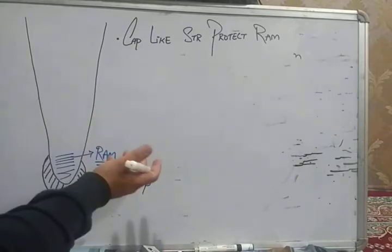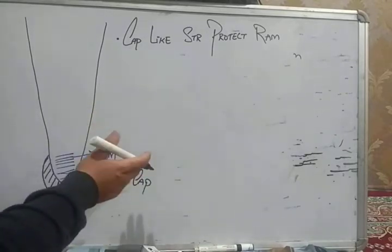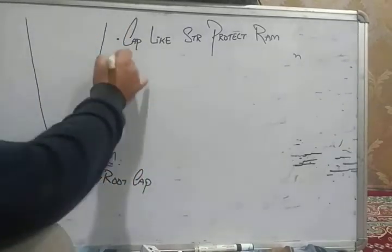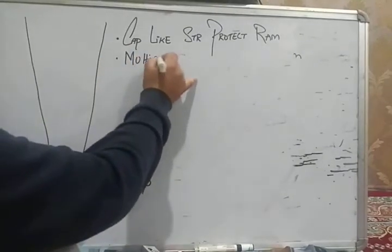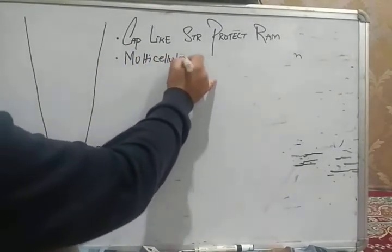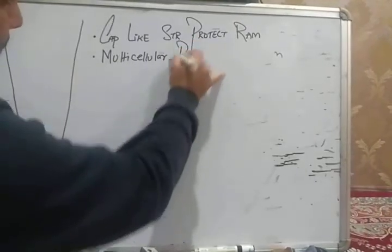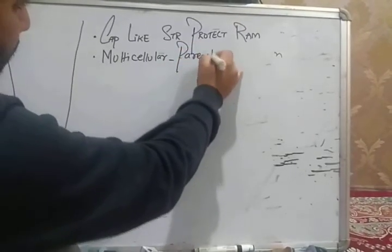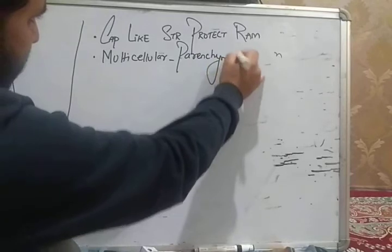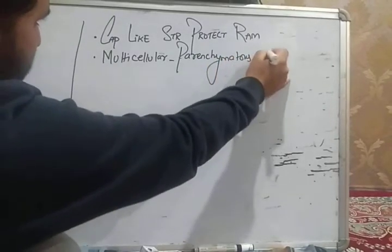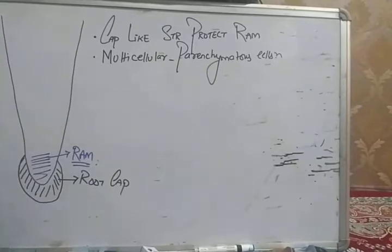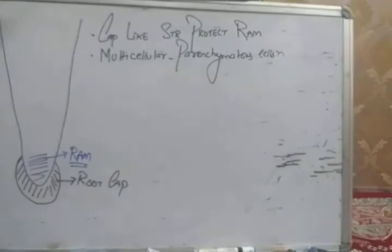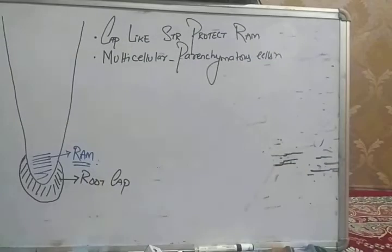This root cap is multicellular and it is made up of parenchymatous cells. Parenchymatous ka matlab hai living cells. In anatomy we will read what parenchyma means - by parenchyma we mean living cells.